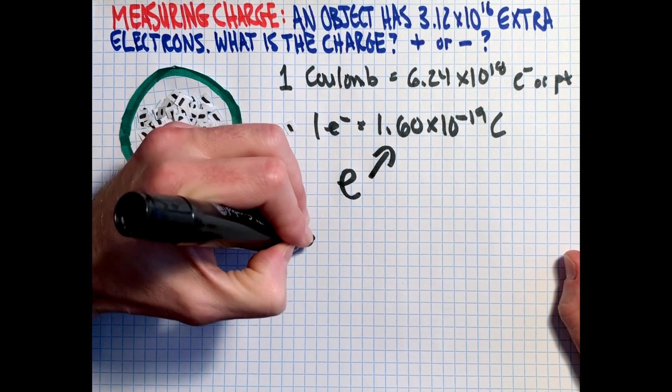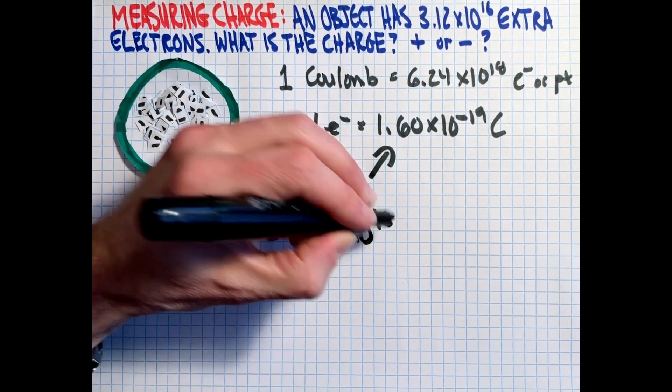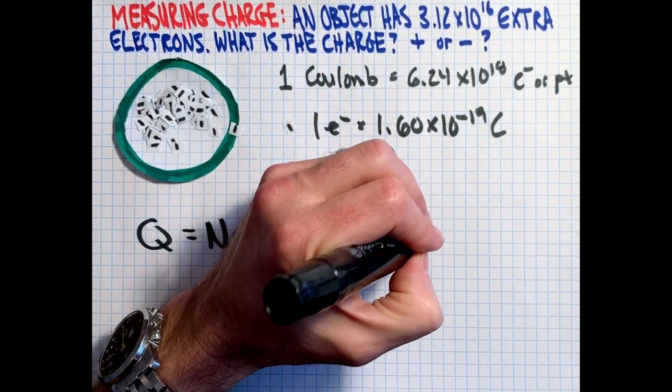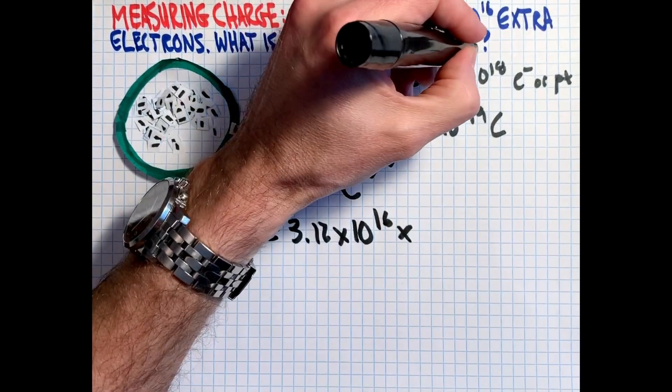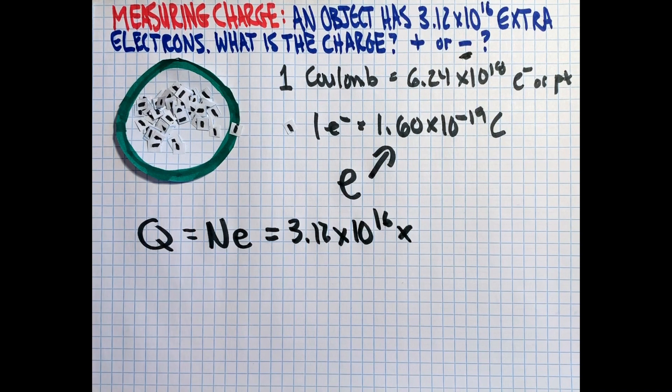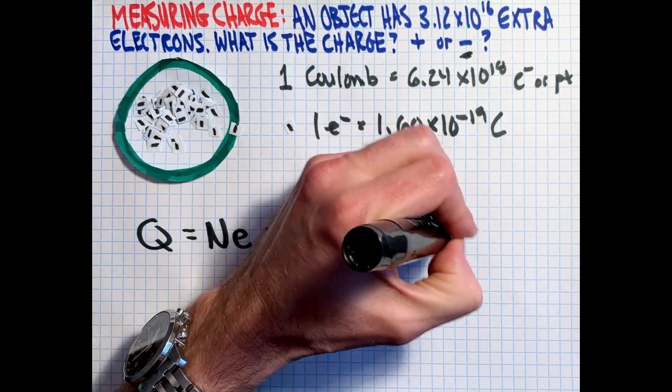our number is 3.12 times 10 to the 16 times, we'll say minus since we're talking about negative electrons. So that answers that part of the question. I'll let you go to remember that electrons are negative. So extra electrons means we'll be charged negatively. So we'll times that by the charge on one electron.